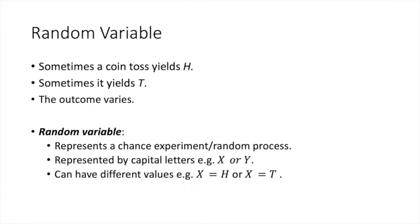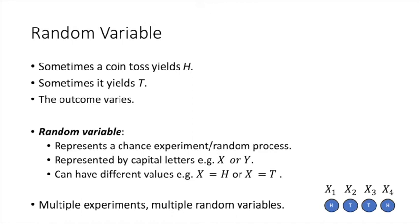Random variables are typically represented by capital letters like X or Y. Depending on the outcome of a chance experiment, a random variable can have different values. For example, if the outcome of an experiment is heads, then X equals heads; otherwise X equals tails. Now if there are multiple chance experiments, then we represent them by multiple random variables, such as X1, X2, and so on.